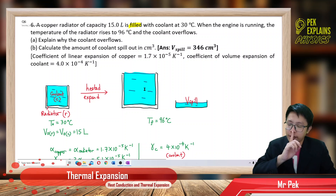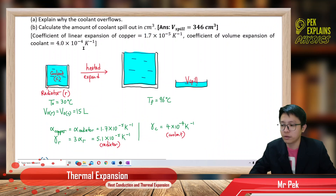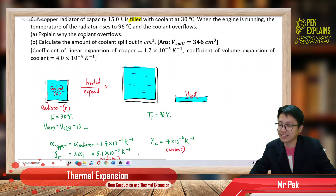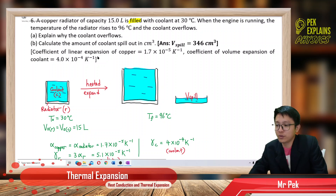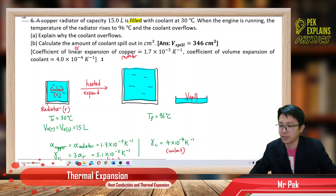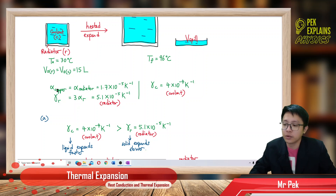Why do I say liquid expands faster than solid? We can check their coefficients. The problem gives us the coefficient of linear expansion for copper — that is the alpha, only for linear expansion, for the length of the copper. Copper is the radiator, the solid. So we have the alpha for copper, which is also the alpha for the radiator, the solid.